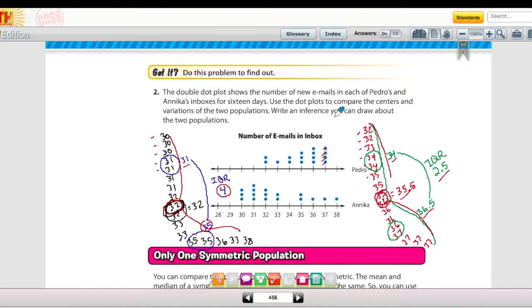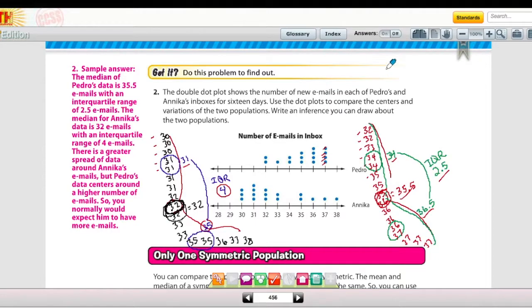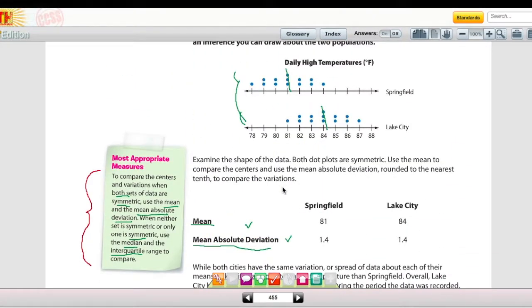It says to write an inference that you can draw about the two populations. The median of Pedro's data is 35.5 with an interquartile range of 2.5. The median for Anika's data is 32, and the interquartile range is 4. So another statement we can make is there is a greater spread of data around Anika's emails, but Pedro's data centers around a higher number of emails. So you normally would expect him to have more emails. We're just analyzing the data after we calculate the median and interquartile range. The reason we use the median and interquartile range is because neither one of these dot plots is symmetric, whereas in the previous example, both were symmetric, and that's why we use the mean and the mean absolute deviation.